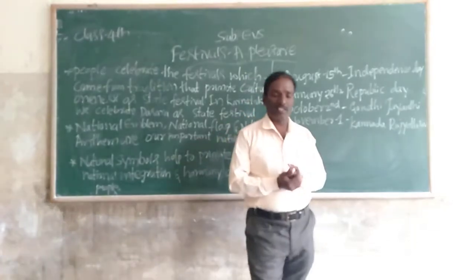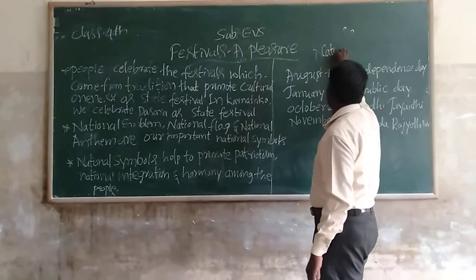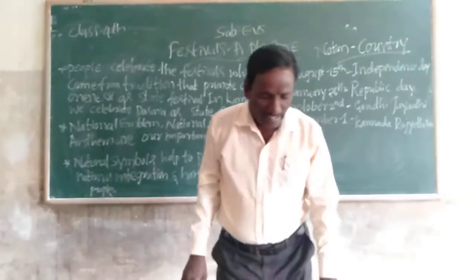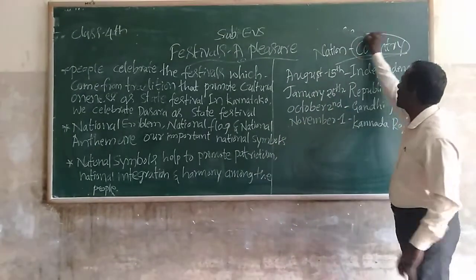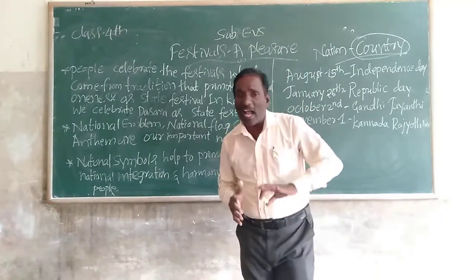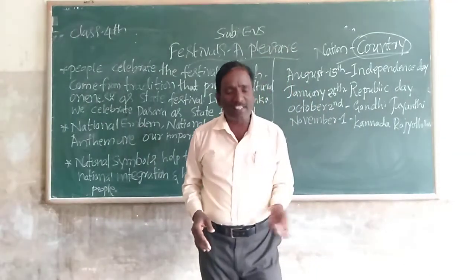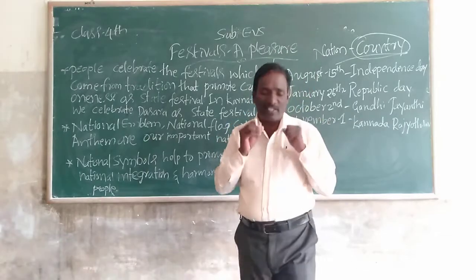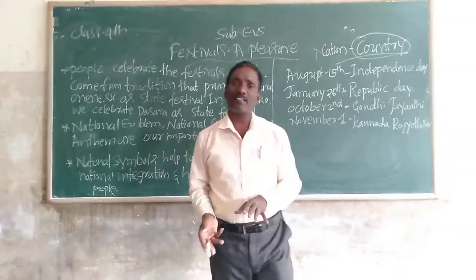And you know, dear children, generally we use the words 'nation' and 'country' interchangeably. But a country means a specific geographic area that comes under a specific administration system. A nation means a country having people with the same history, culture, desire, and a feeling of oneness — that is called a nation.